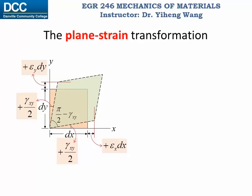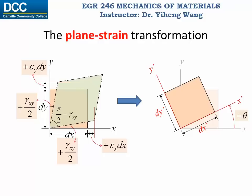According to the sign convention, negative normal strain indicates contraction of the length, and negative shear strain indicates that the original 90-degree angle would become obtuse. Similar to stress transformation, we are interested to know that for a different orientation of the same particle at the same location, what are the new strain components.